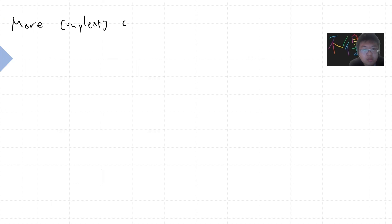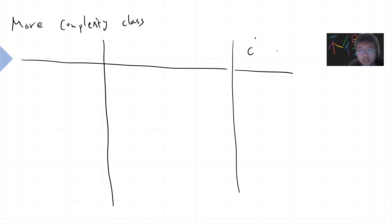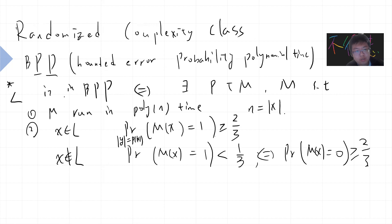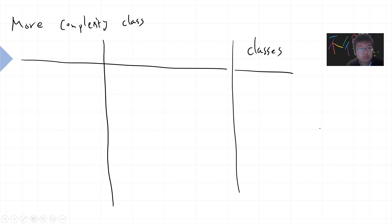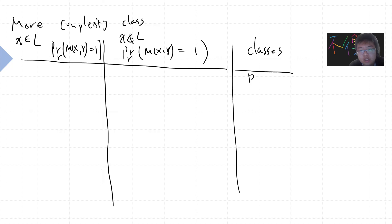Let me say something about more complexity classes related to BPP. Computer science is very creative — they create a lot of classes. I can run the same parallel framework: if x belongs to L, the probability that M(x, r) outputs one equals some value, and if x does not belong to L, the probability of M(x, r) outputting one equals another value.